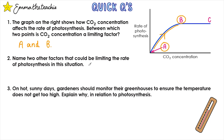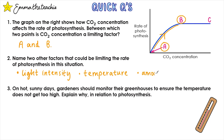Question 2: name two other factors that could be limiting the rate of photosynthesis in this situation. There are three possibilities: light intensity, temperature, and amount of chlorophyll. Any two from those.